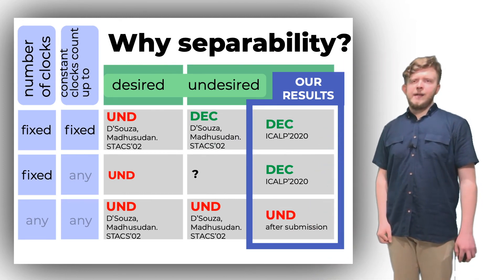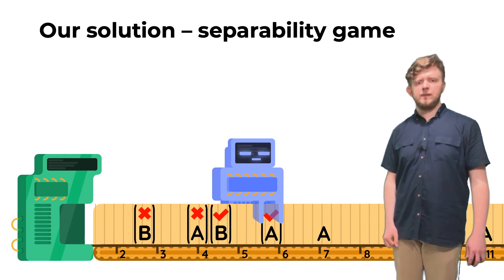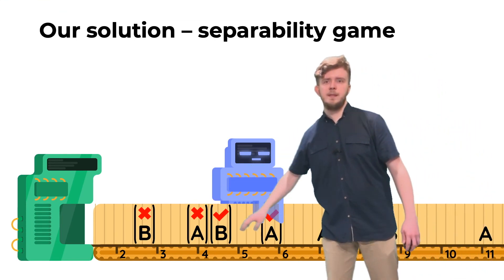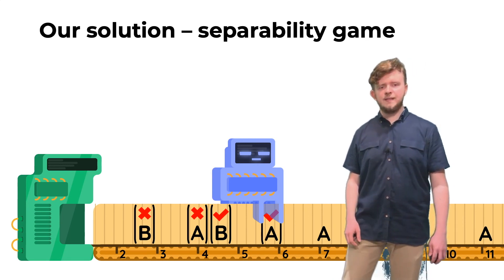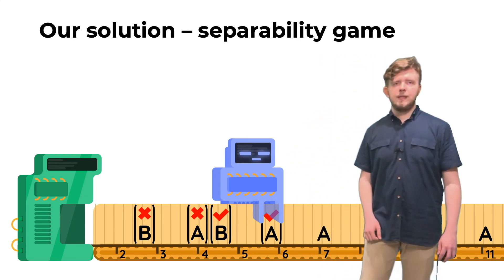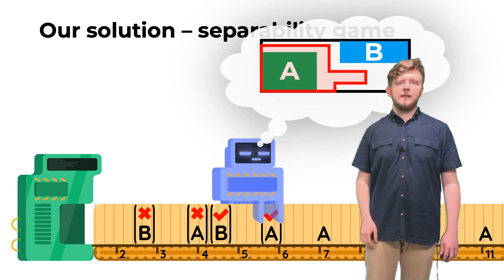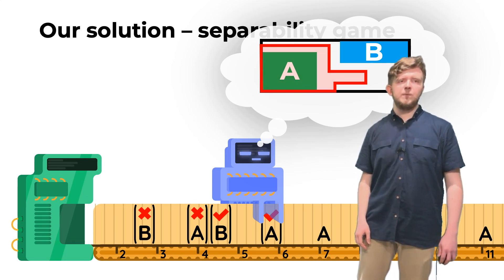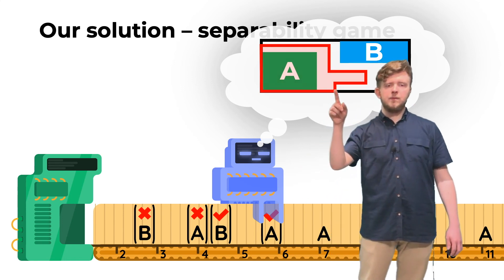Speaking of games, our game for separability is very simple. As before, there is a timed input here. The actions of controller are very limited though. It can only play accept or reject symbols. Conceptually, he wants to prove that he knows a separator. To this end, he classifies the prefixes of the input word, based on whether they belong to the red language or not.